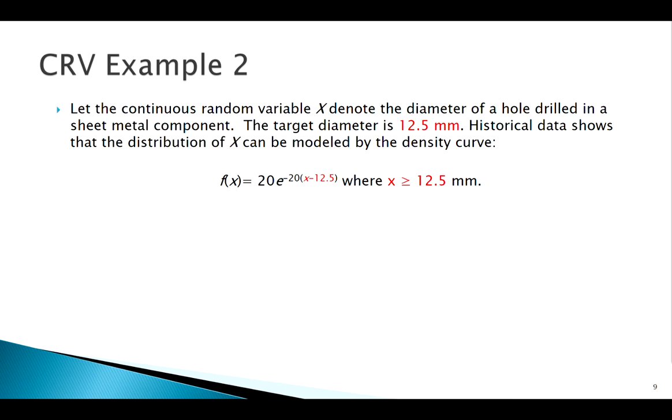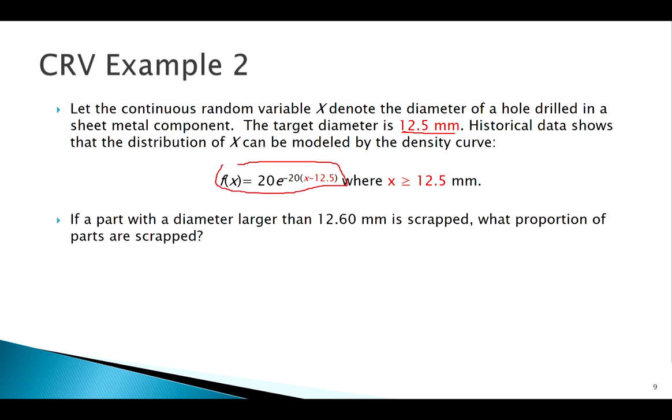Say we're manufacturing some sort of sheet metal, drilling holes, shooting for 12.5 millimeters, but we're not always going to hit exactly what we're shooting for. The density curve here's our equation, we have some sort of exponential equation. If it's over 12.6, that part's not going to work for us.